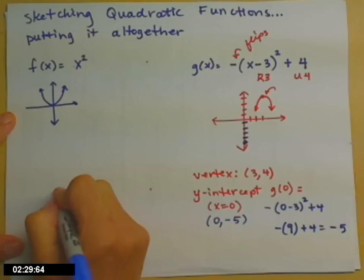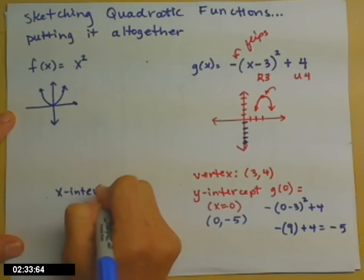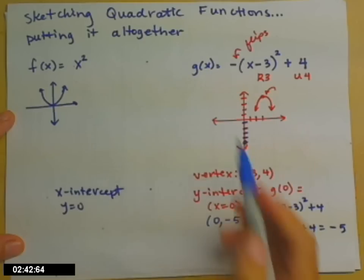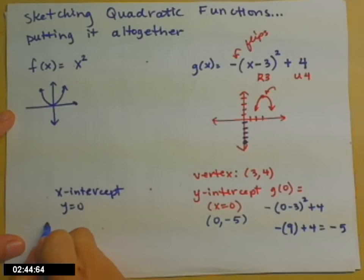When you're asked to find the x-intercept, you set y equal to 0. And when we run functions, y often gets played by a g of x or an f of x. So we'll go up to our function and we'll put a 0 on the left-hand side.